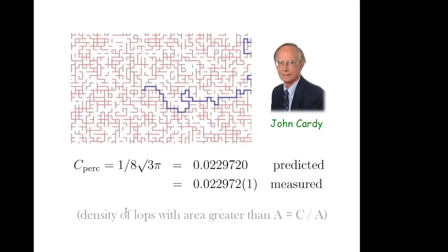This is what John Cardy did in the example of percolation I mentioned. He tried to look at percolation through the lens of logarithmic conformal field theory and predicted the value for one of the exponents. The density of loops with area greater than A is expected to go as some constant divided by area. That constant was measured to be 0.022972, and John did a computation using logarithmic CFT and predicted that analytically. The agreement is perfect - I wish many of my papers had this sort of perfect match of experiment and theory.